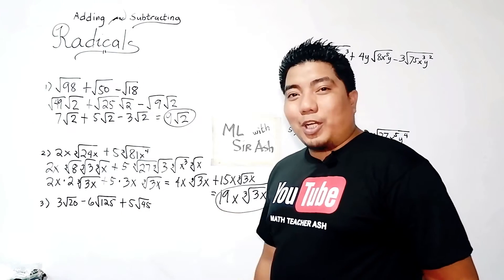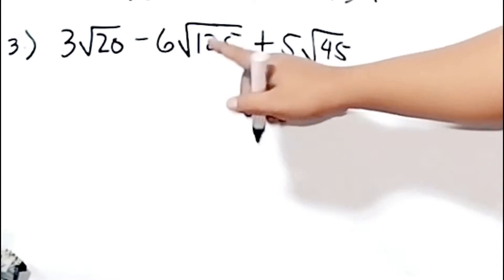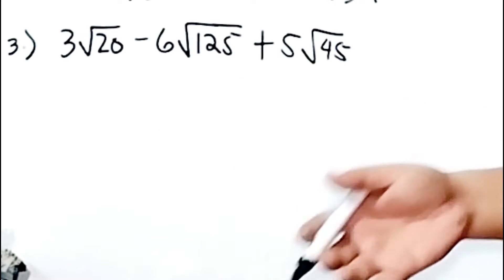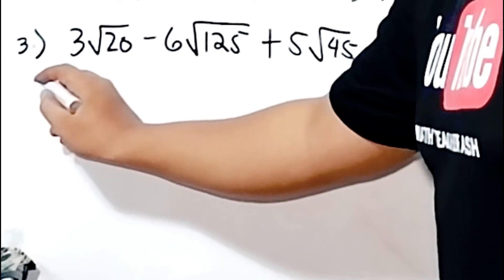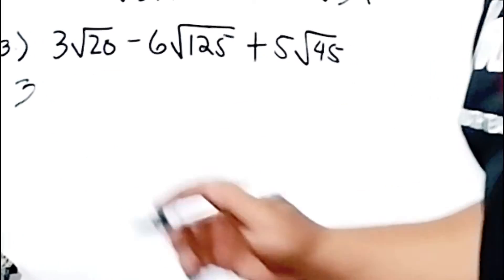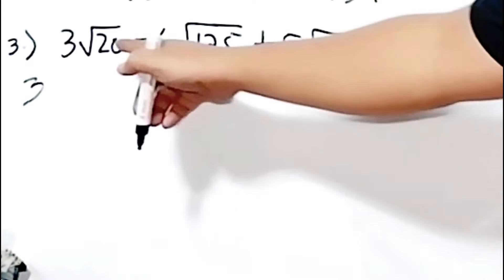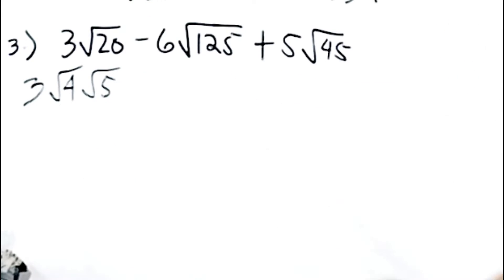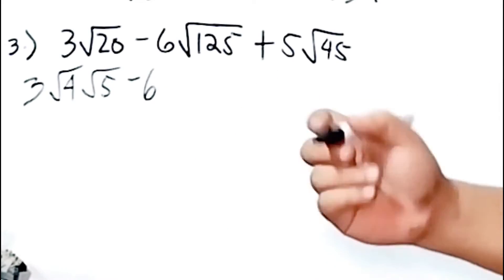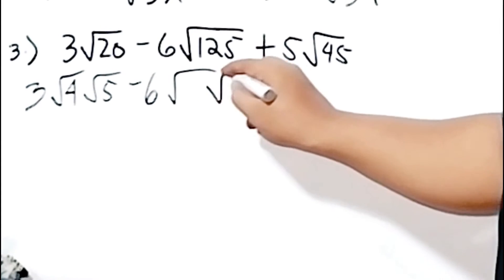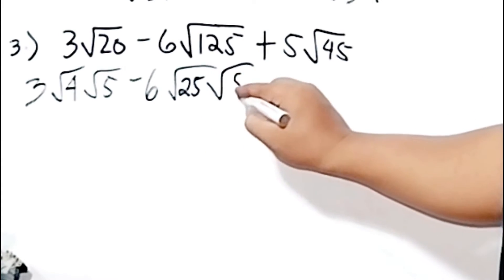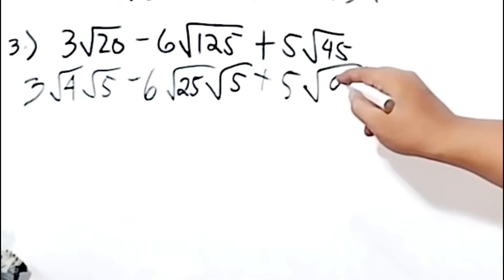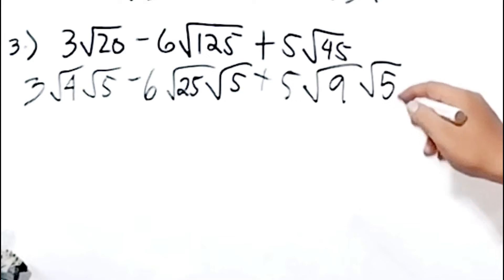Let us go to our third example: 3 square root of 20 minus 6 square root of 125 plus 5 square root of 45. So 20, 125, and 45 are not the same terms but can still be simplified. We break down 20 into square root of 4 times square root of 5. We break down 125 into square root of 25 times square root of 5, since 25 times 5 is 125. And for 45, we have square root of 9 times square root of 5, because 9 times 5 is 45.